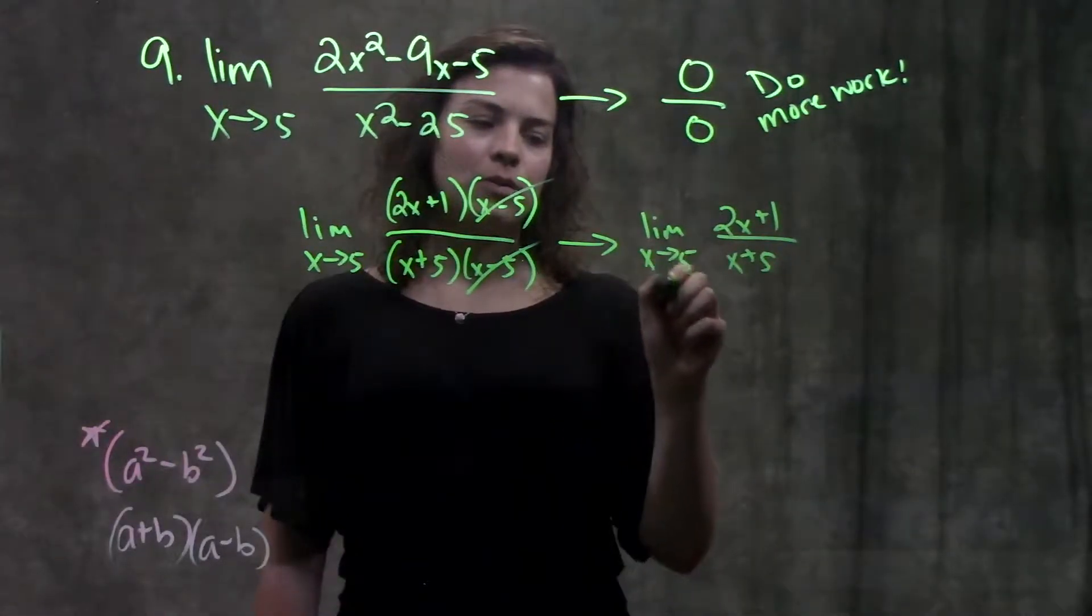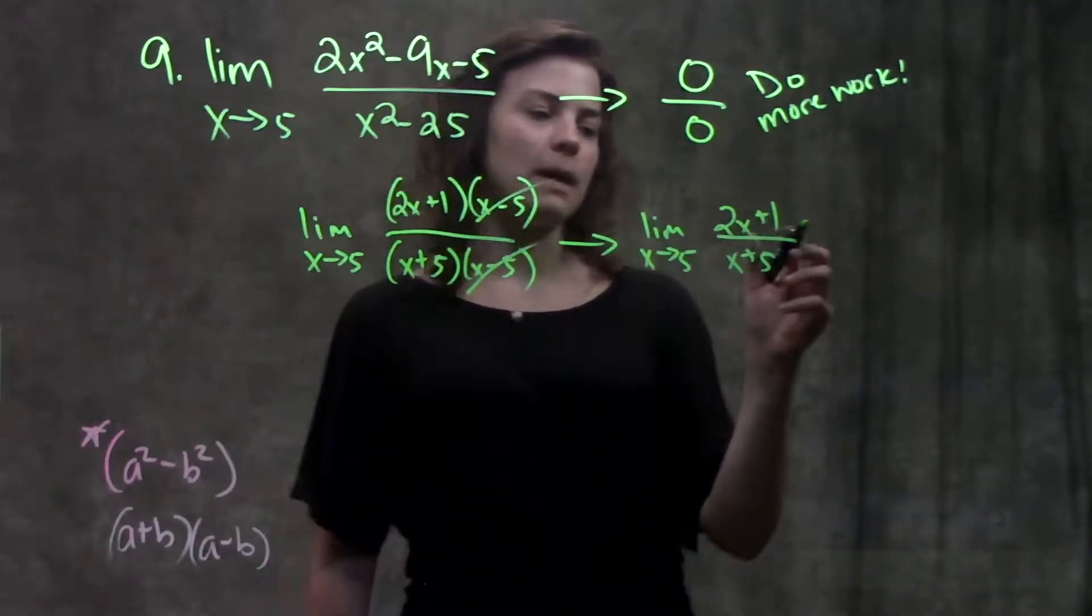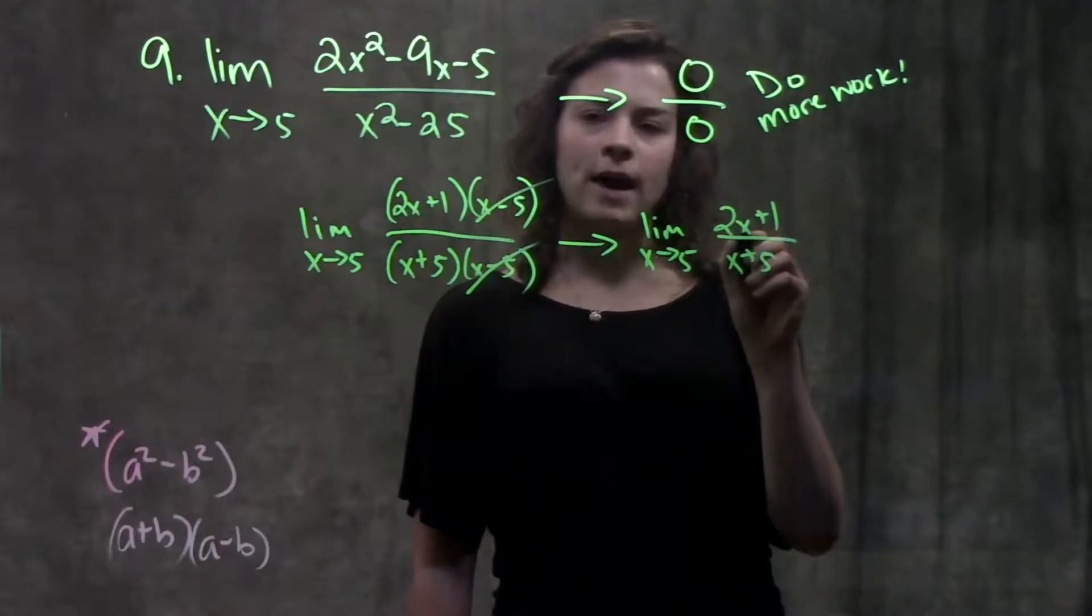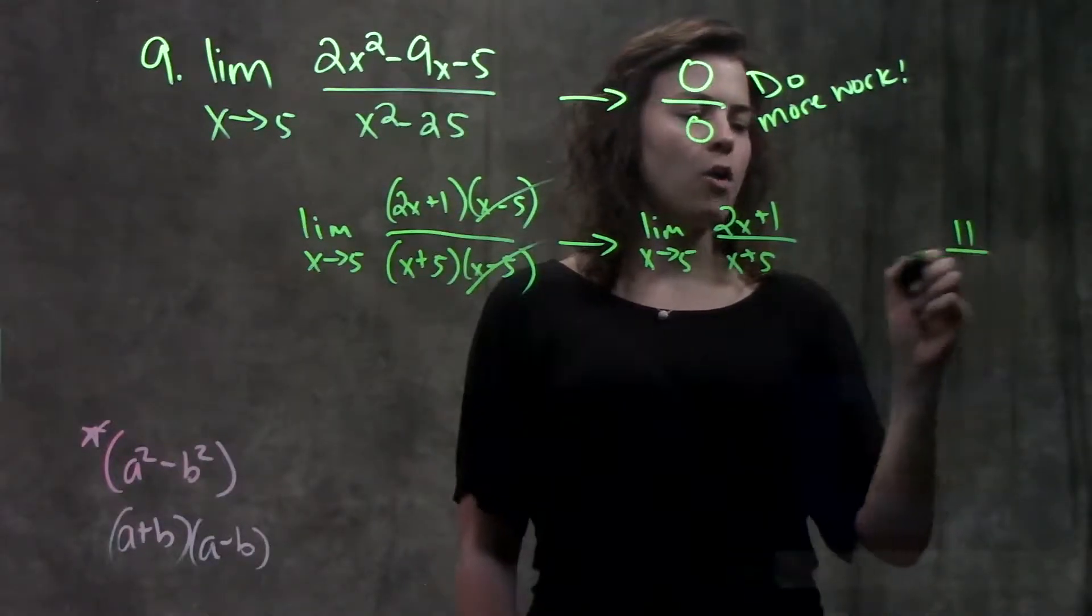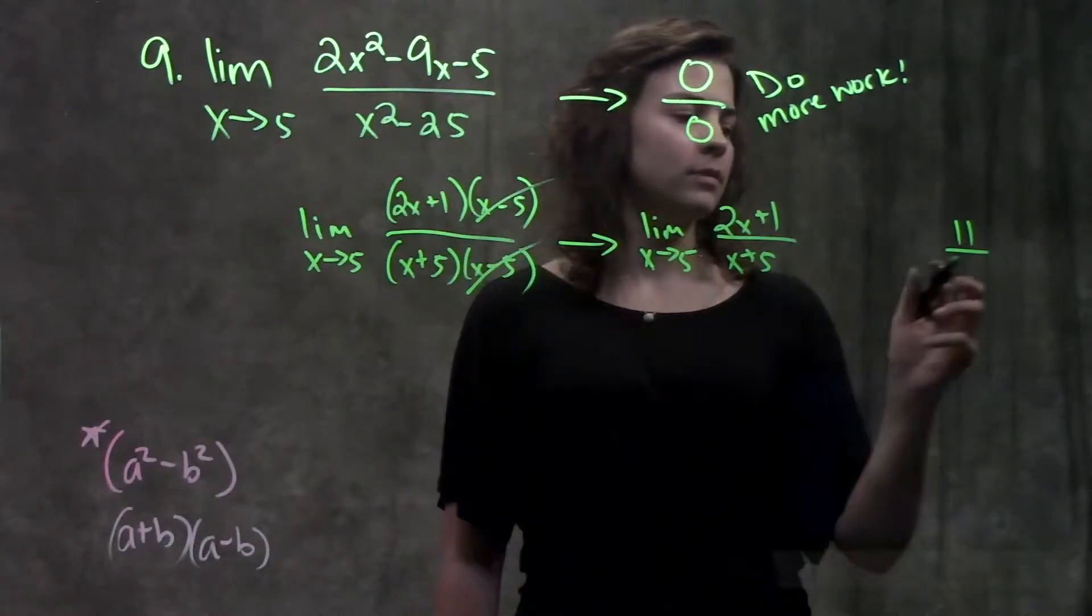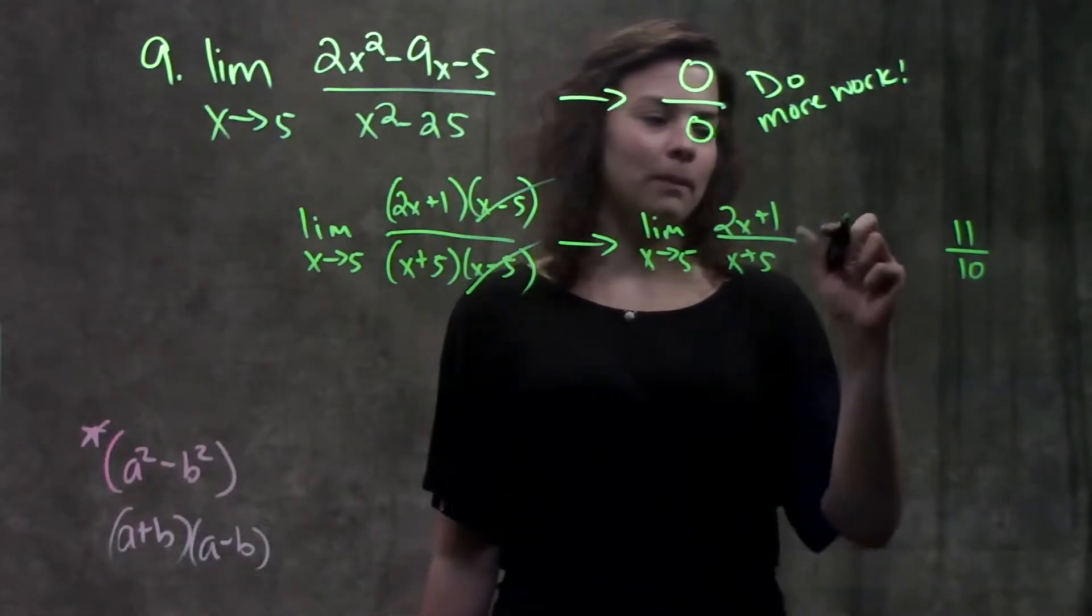Alright, now I'm going to try direct substitution again, see what happens. When I plug in 5 into the top here, I get 2 times 5 plus 1. 10 plus 1, that gives me 11. Over on the bottom, 5 plus 5 gives me 10. This is a valid answer. That means I'm done with this problem.